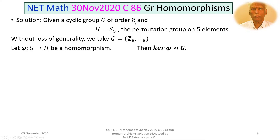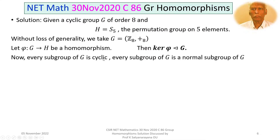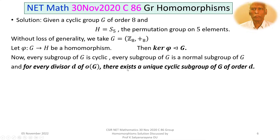So the possible orders for ker(phi) are the divisors of 8, that is 1, 2, 4, and 8. Every subgroup of G is cyclic and normal, and for every divisor D of the order of G, there exists a unique cyclic subgroup of G of order D. So the possible kernels correspond to these divisors.